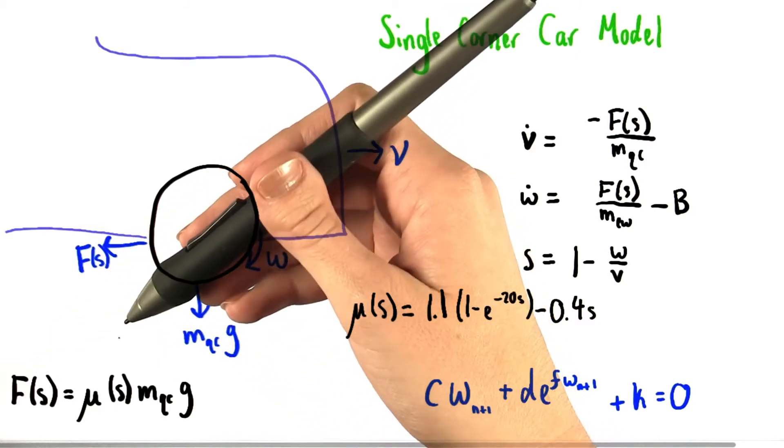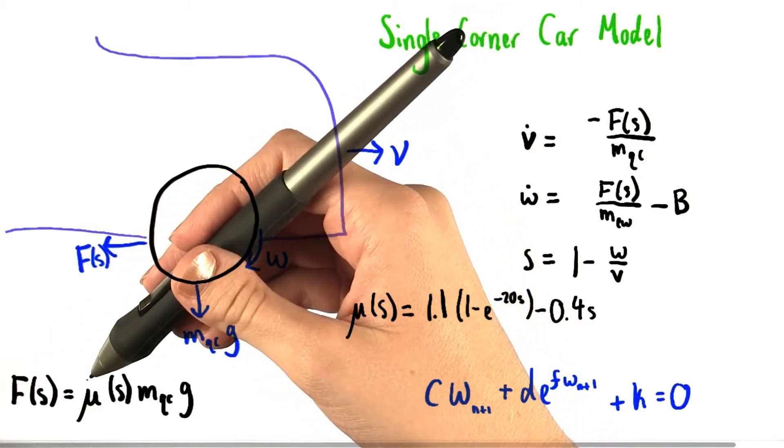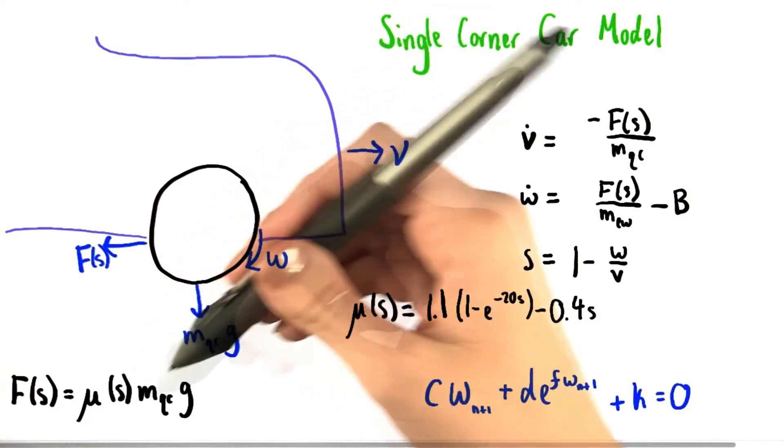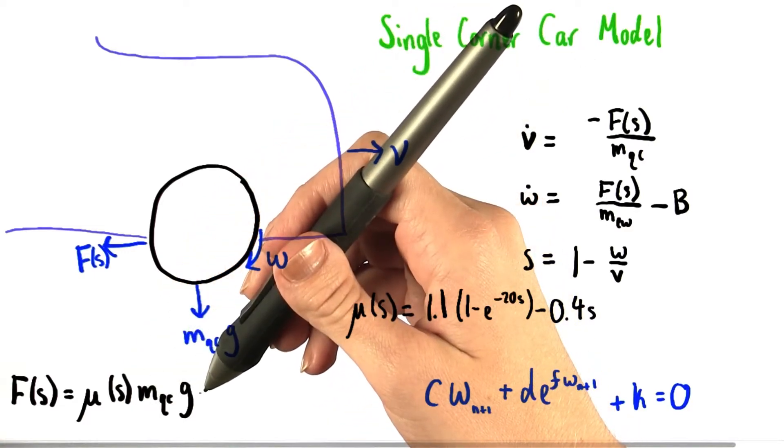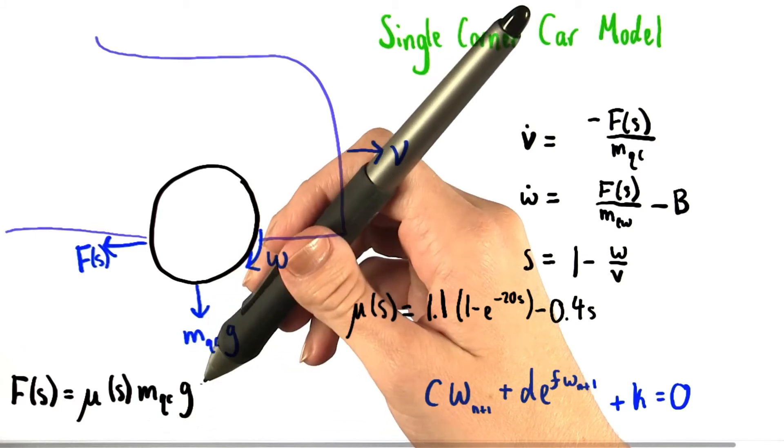The force of friction is equal to, as you've seen before, the coefficient of kinetic friction, which is a function of wheel slip, times the normal force, which in this case has a magnitude equal to that of the gravitational force.